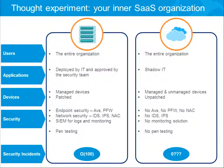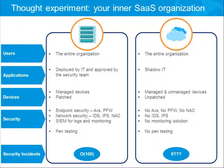From a security incident point of view, you have hundreds of incidents in your on-premise organization and zero in your unprotected SaaS organization. So that's the case, and I ask: is it really zero?